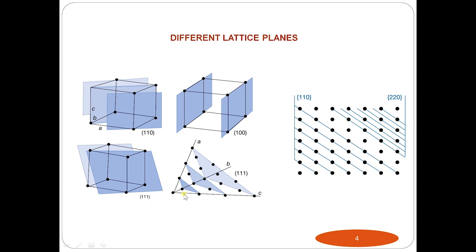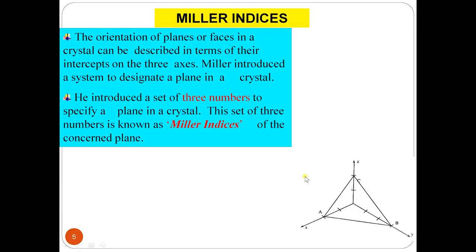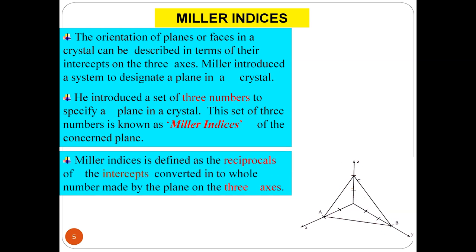Just by joining different imaginary points, you can think of planes. The orientation of the planes or faces in a crystal can be described in terms of their intercepts on three mutually perpendicular axes. Miller introduced a system to designate a plane in a crystal using a set of three numbers known as Miller indices. Miller indices are defined as the reciprocals of the intercepts, converted into whole numbers, made by the plane on the three axes.